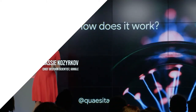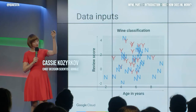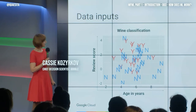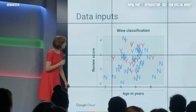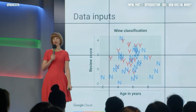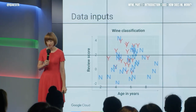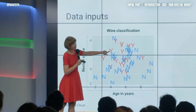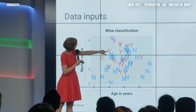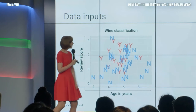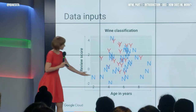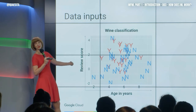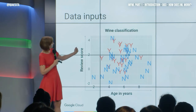So how does this magical machine learning thing work? We have some data to learn from, and our task is going to be to predict whether or not I like a bottle of wine. We have the correct classification for 50 bottles of wine: a red Y for yummy and a blue N for not so yummy. I have the age of the wine in years on one axis and the opinion of some amateur wine critic friend of mine on the Y axis here.